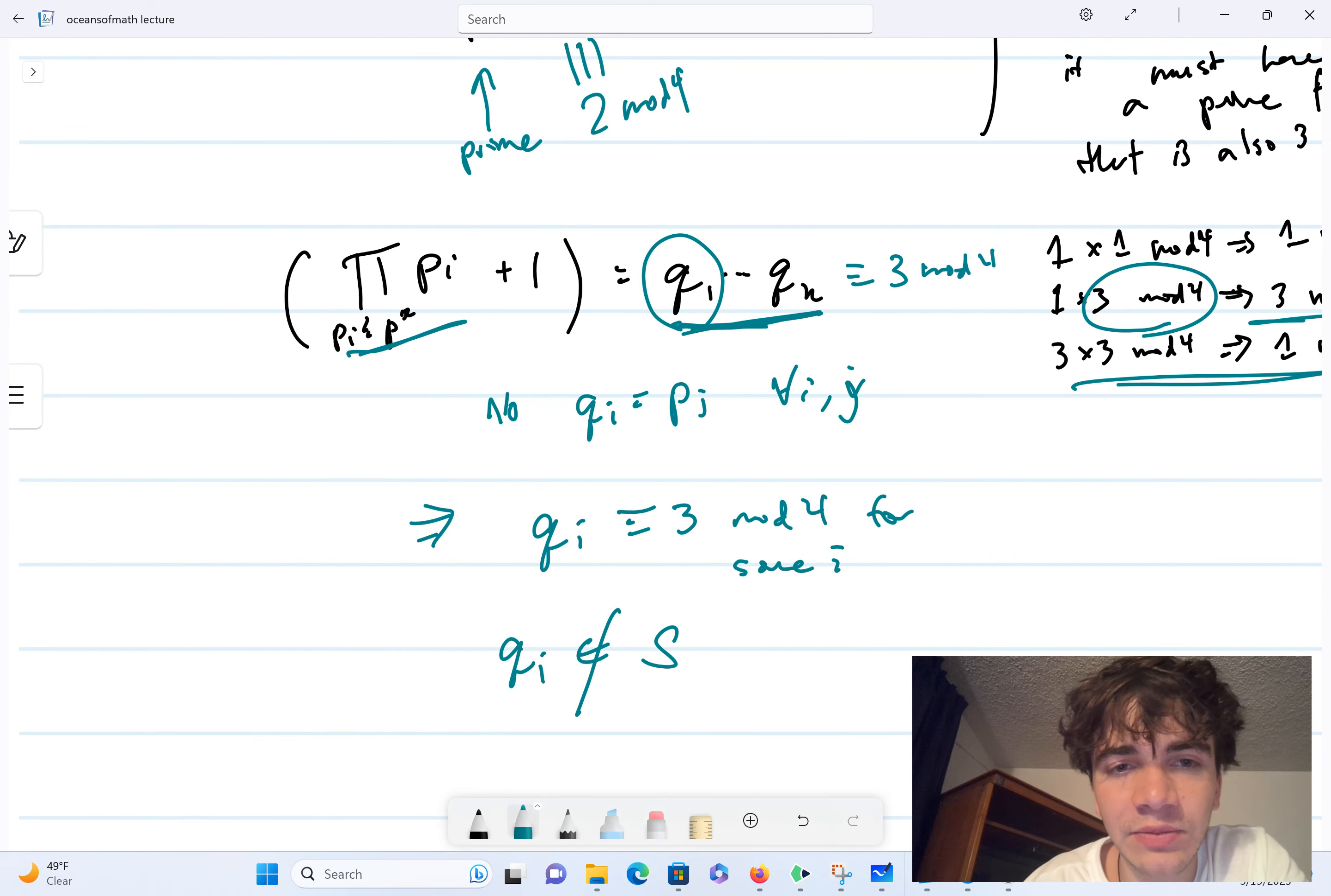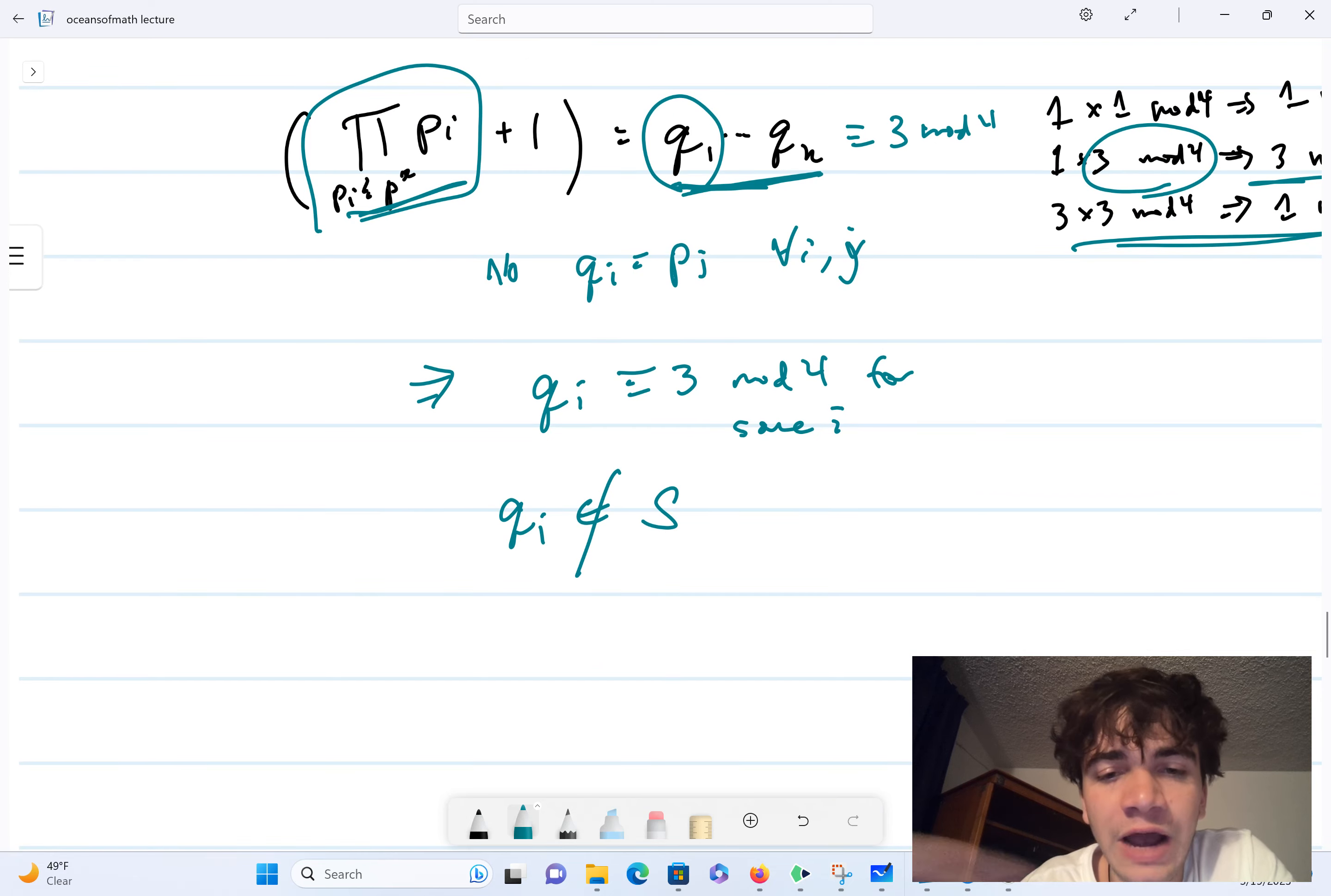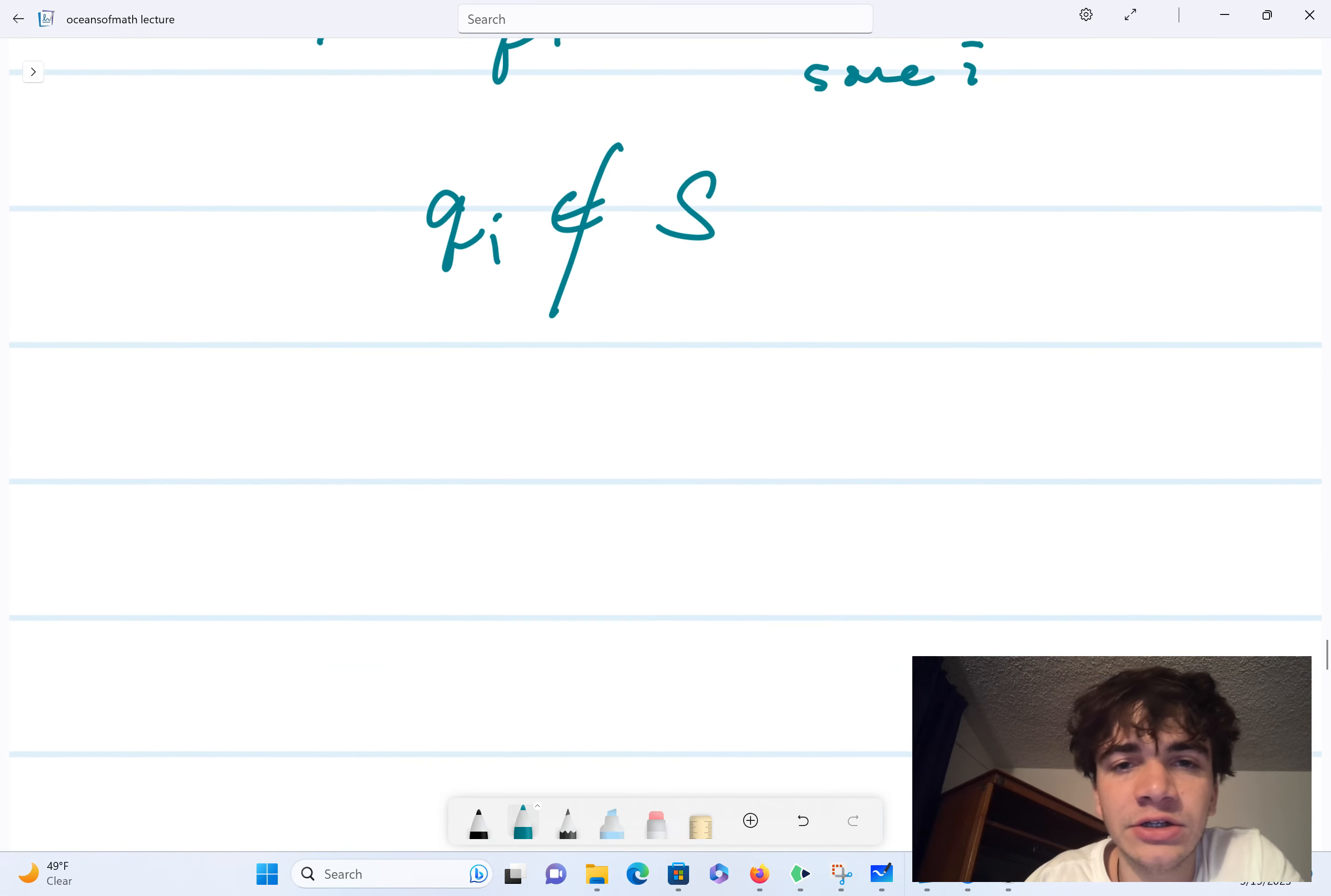Because it's not in, because p star is the maximum element, and we've included everything in S in this product. So we've now found a number, we've found a prime number that is equivalent to 3 mod 4, and it doesn't belong to S, and that's a contradiction.